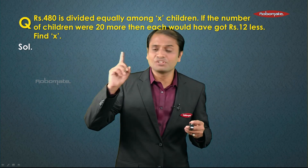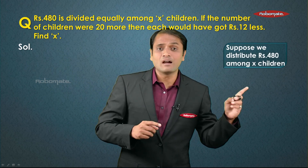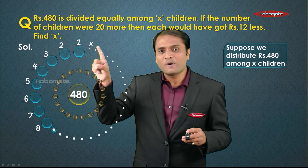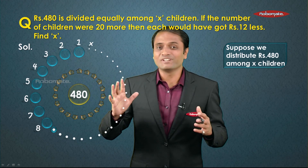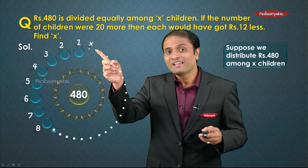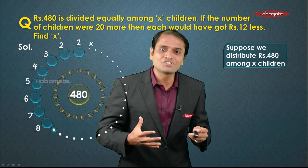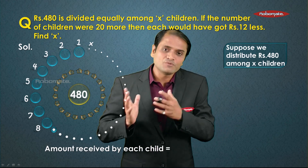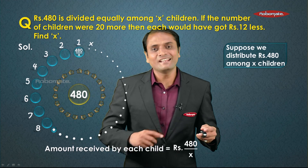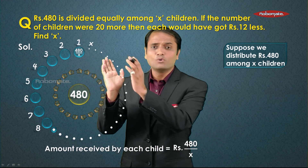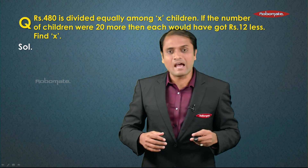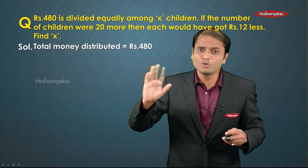The first line of the question says rupees 480 is equally divided among x children. Here the number of parts is unknown — it is x. So 480 is divided into x equal parts. Using the rule from our examples, the amount received by each child will be rupees 480 divided by x.